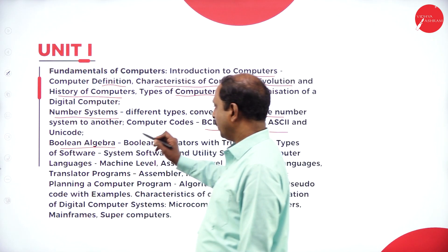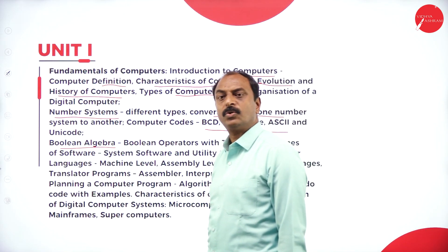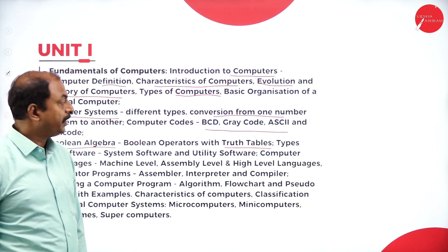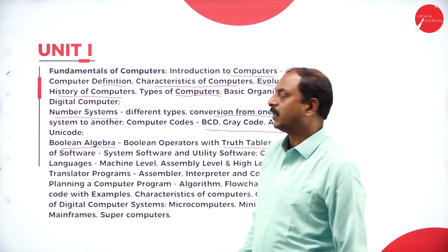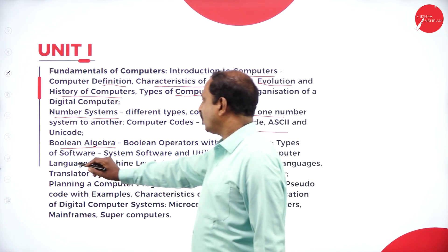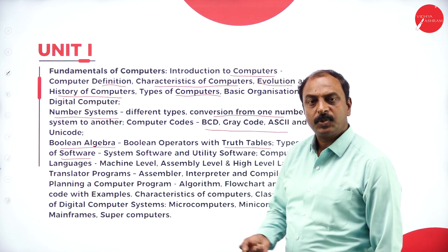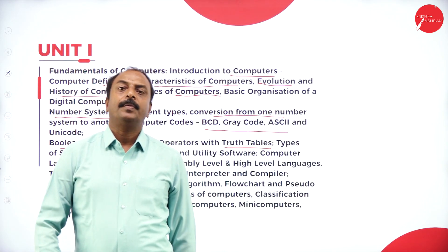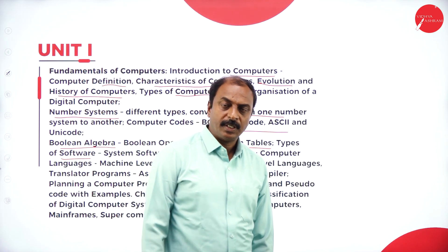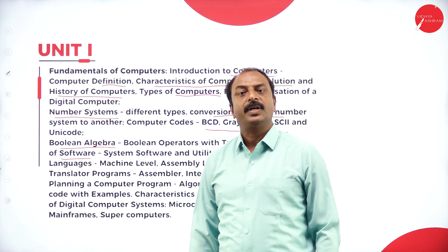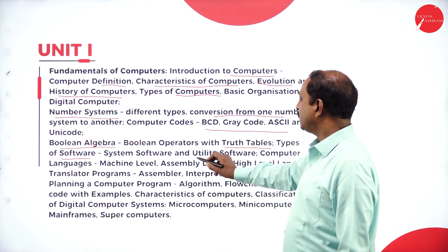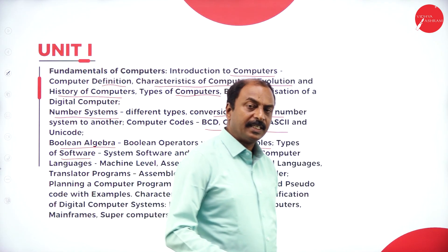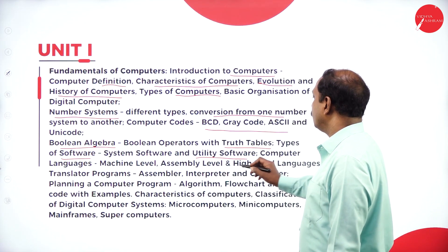Next in unit one is Boolean algebra, which deals with binary numbers 0s and 1s, or the concept of true or false — in other words, truth tables and truth values. We also cover types of software: the basic definition of software, different types like system software and application software. For example, an operating system is system software, while MS Word or MS Office are application software. We also cover utility software — apart from system and application software, we have translators, linkers, and loaders; even antivirus software is utility software.